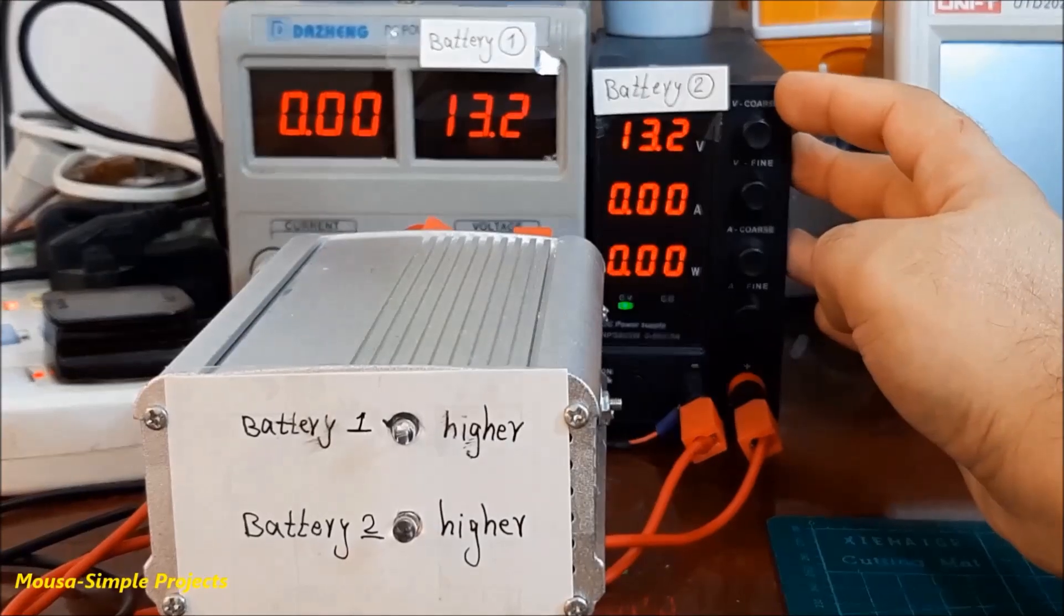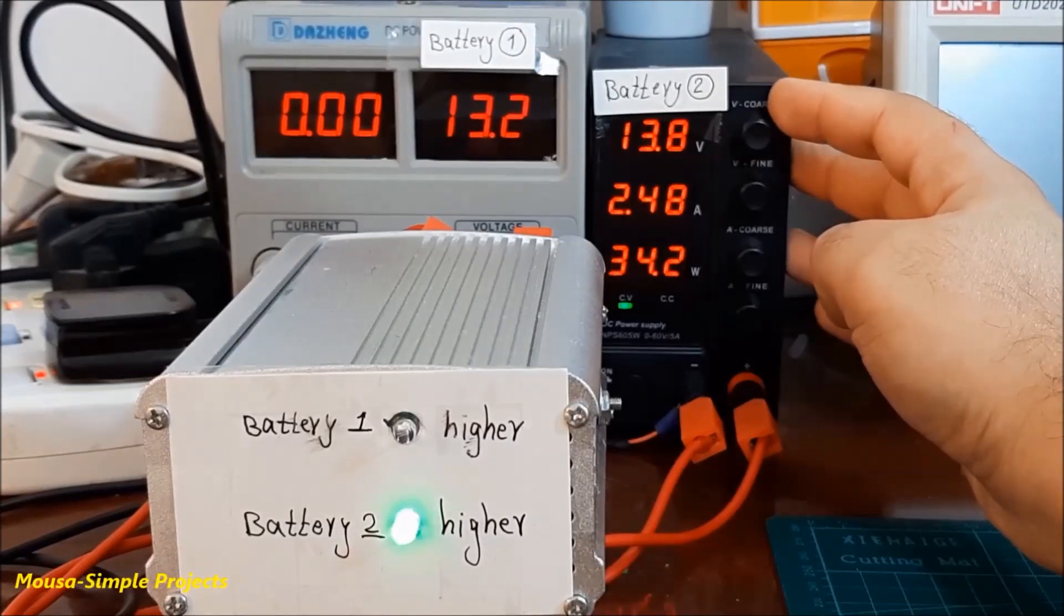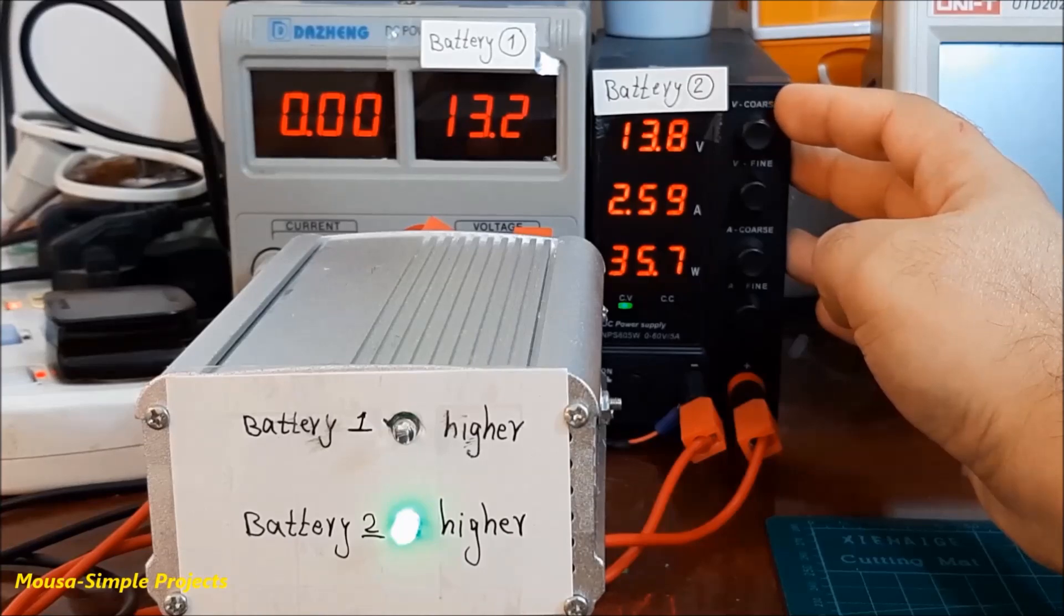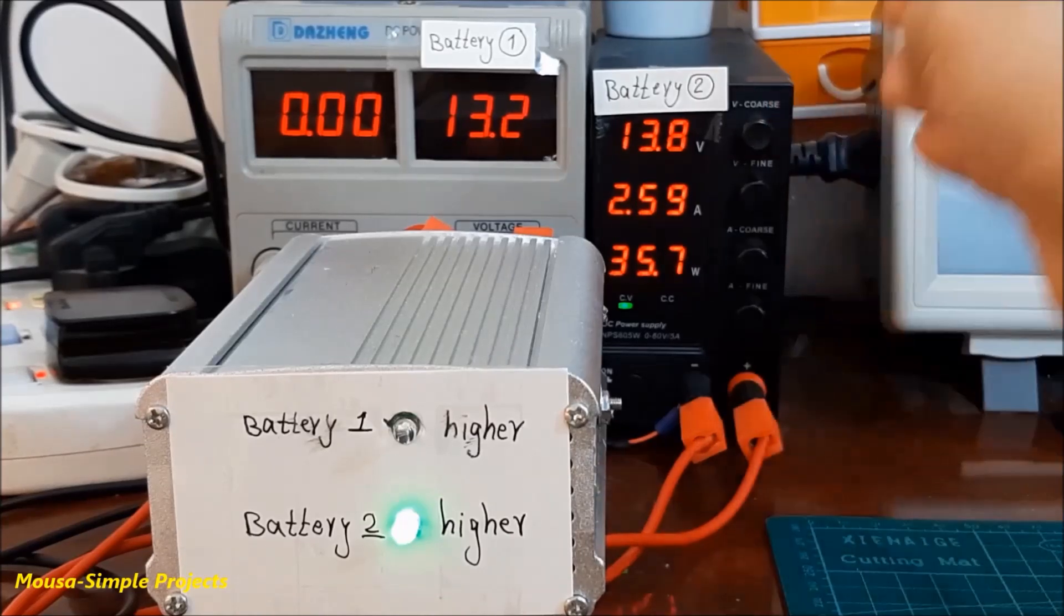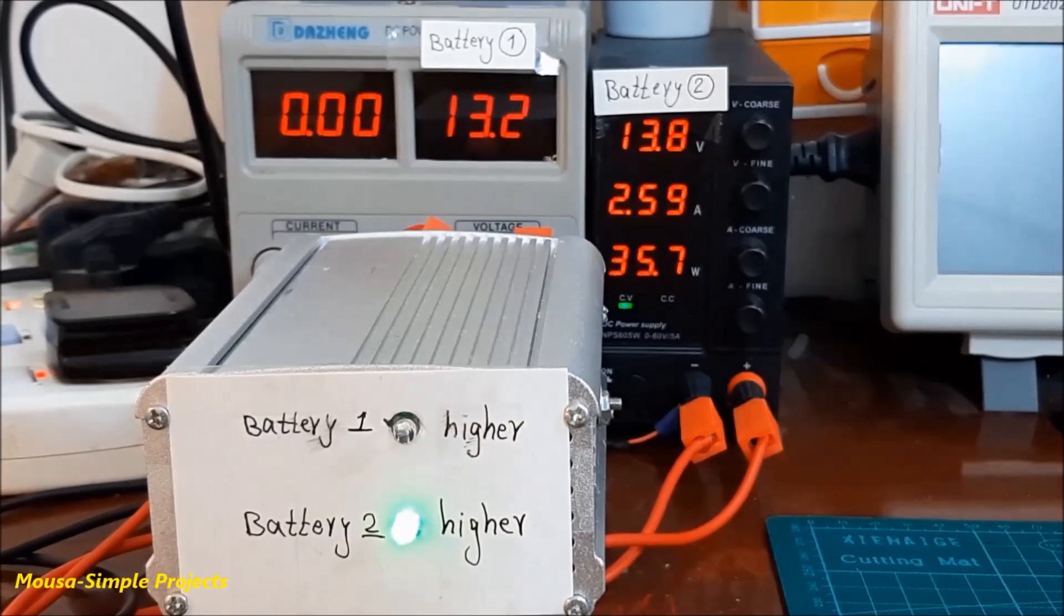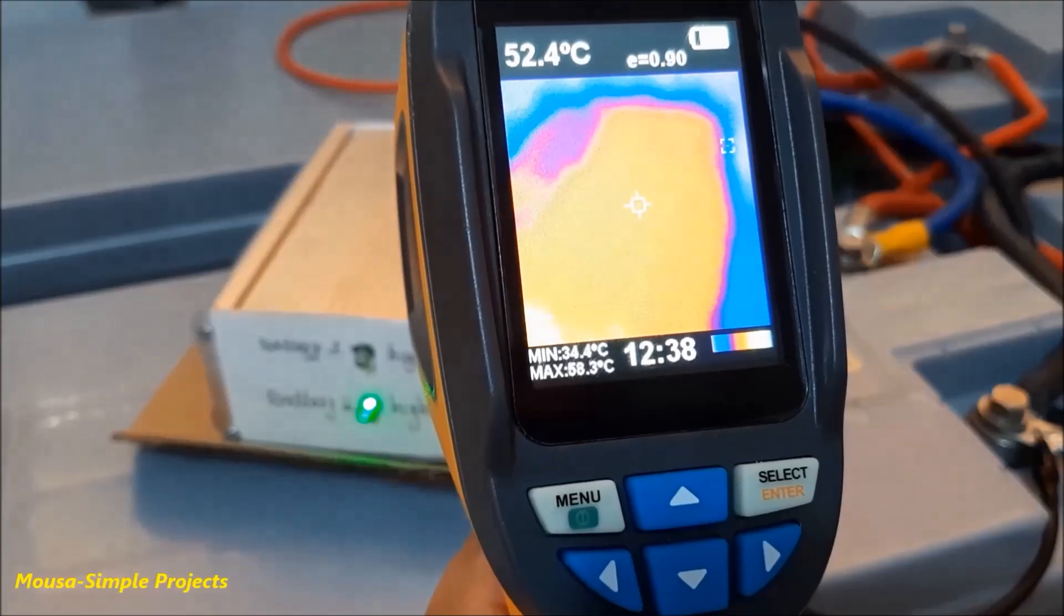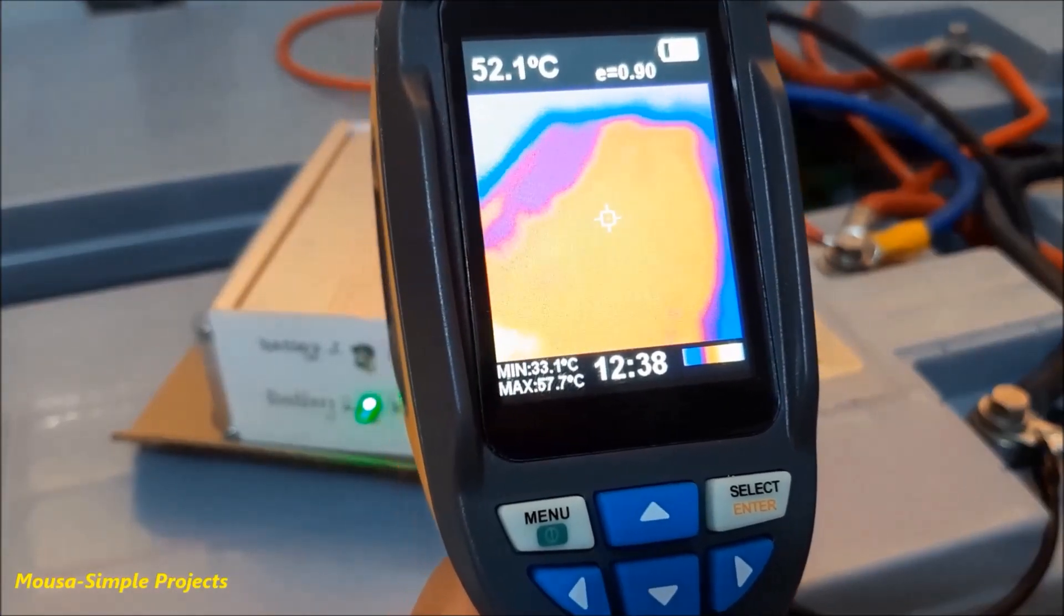The first problem is that the two amps or three amps that this circuit drains from your battery is very low compared to the battery capacity. So it takes a long time to equalize your batteries. The second problem is that it can produce a lot of heat.